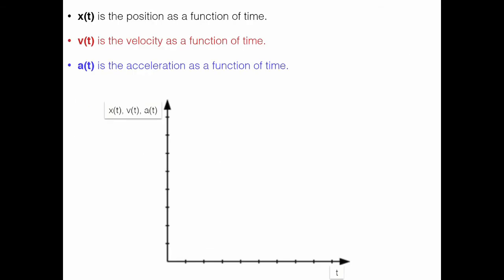I'm going to generate one of these graphs for you, starting with position versus time. We have some object, and the black graph here is the position line or curve. At time t equals zero, the position is also zero. If we move forward in time — say this is one second here — and go up to the graph, the y value for that point is also one, so for example one meter. As this object moves through time, it's changing and increasing its position. At four seconds, it looks like it's about at four meters. So I'm logging its position at each instant in time to get this graph.